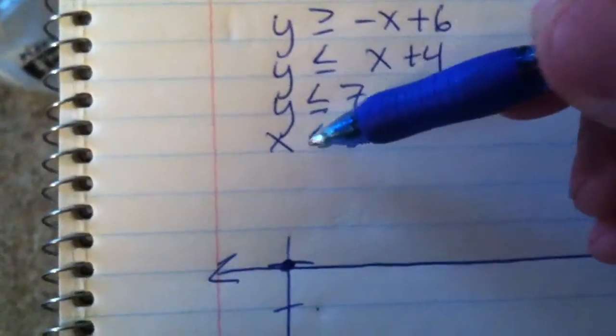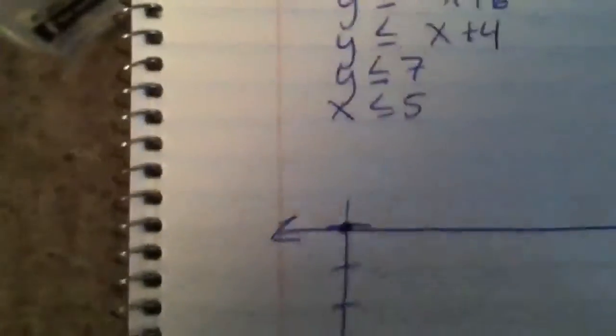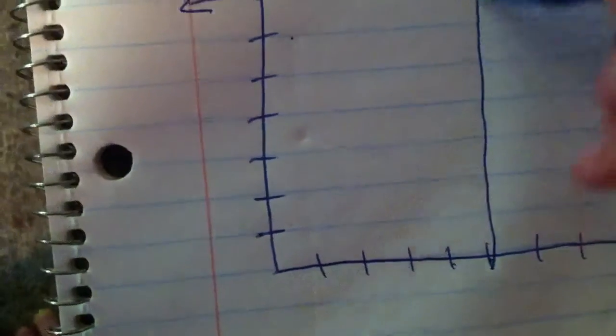This one has just an X, and that's it, so that's an up and down line. 1, 2, 3, 4, 5. So that's like this.